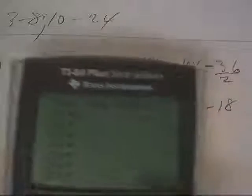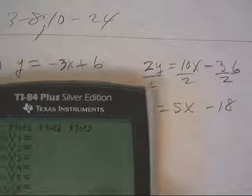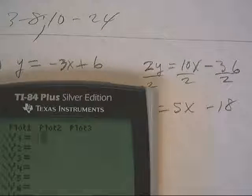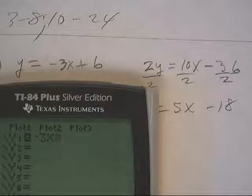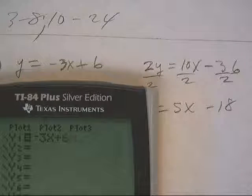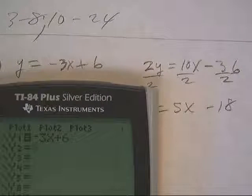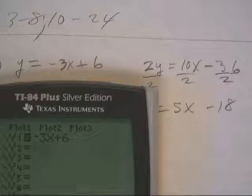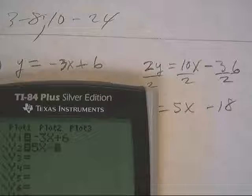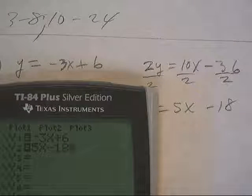We want to find the intersection by graphing. So let's do negative 3x plus 6. And then down here, let's do 5x minus 18. Now let's graph.